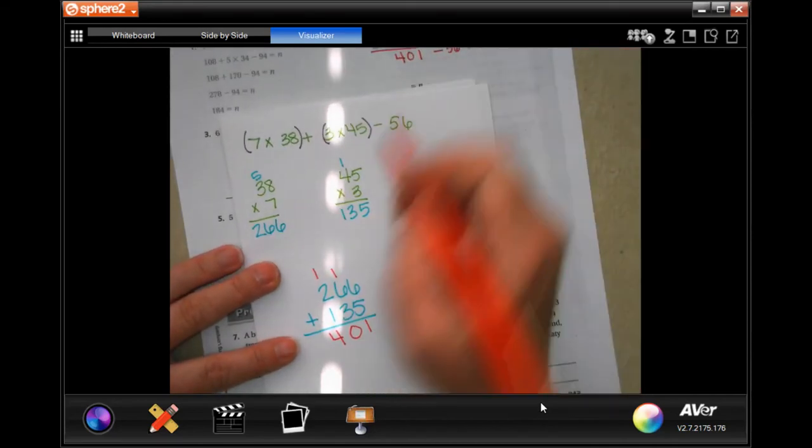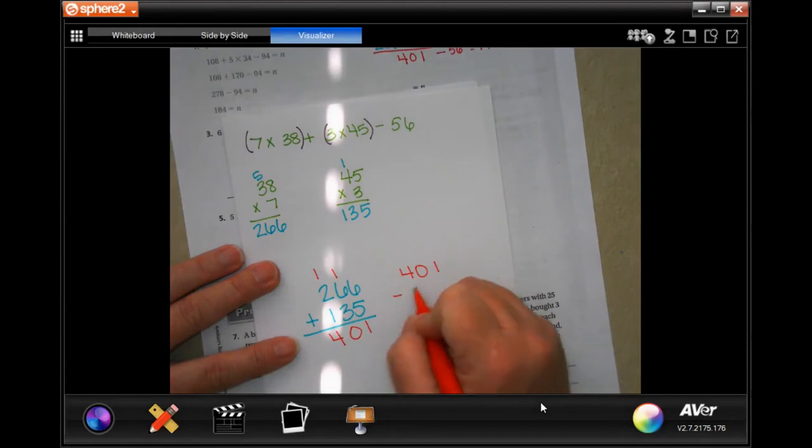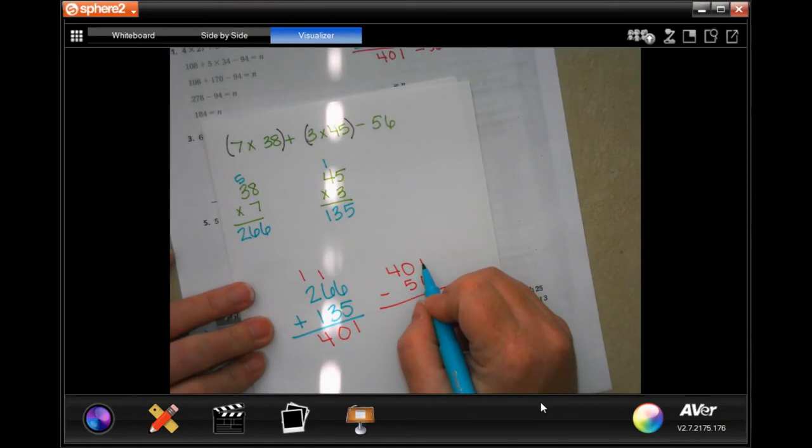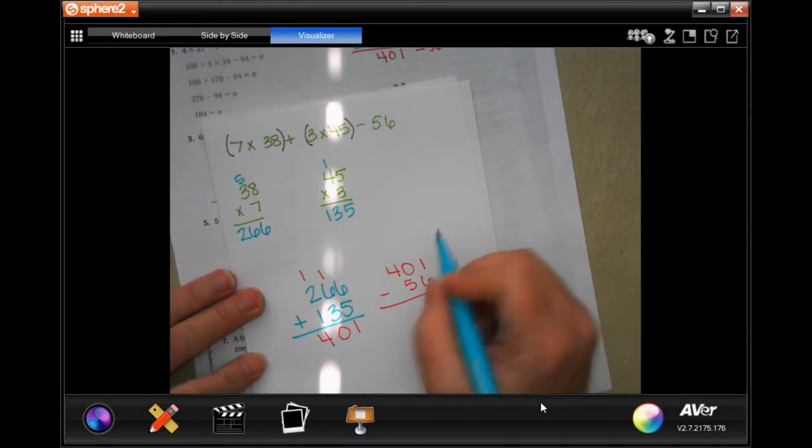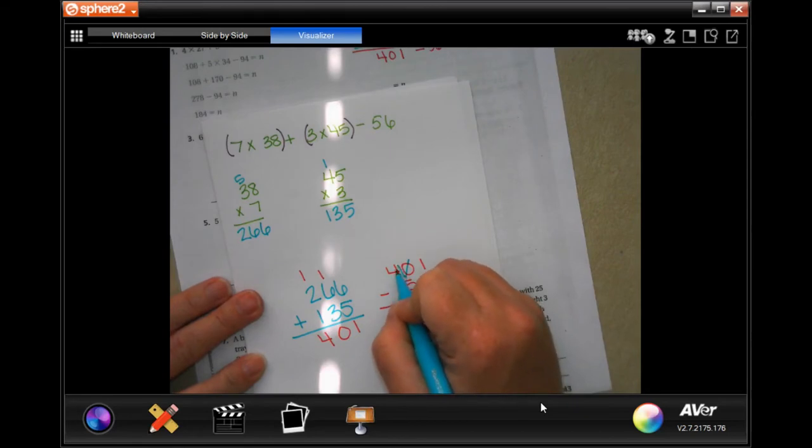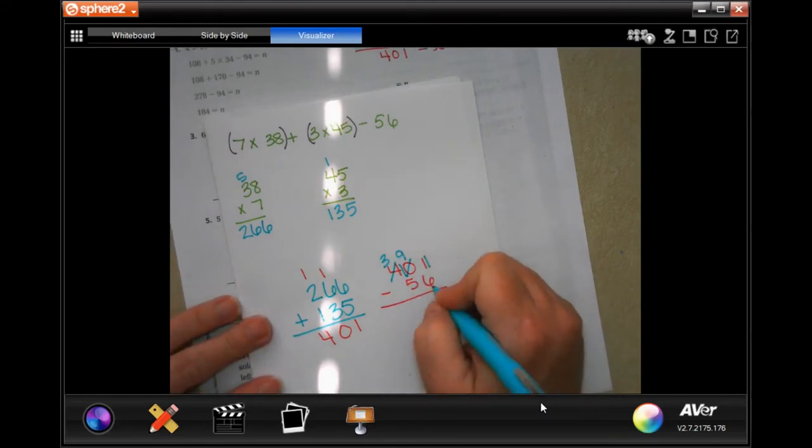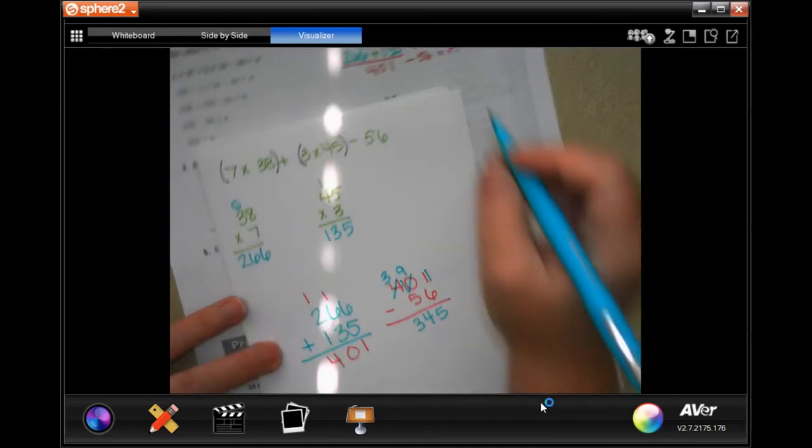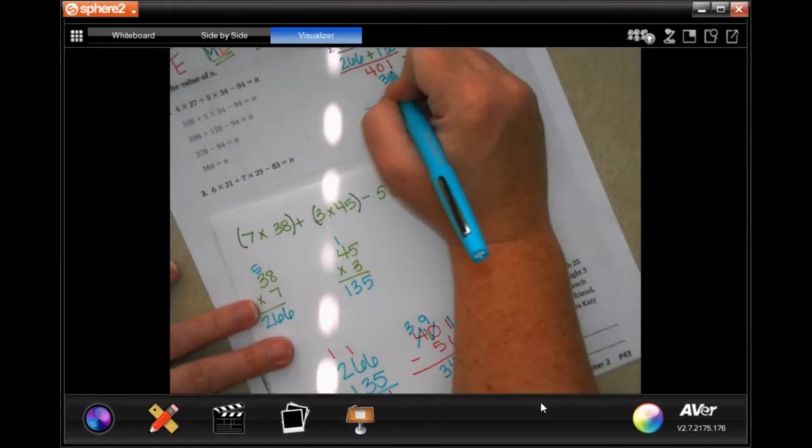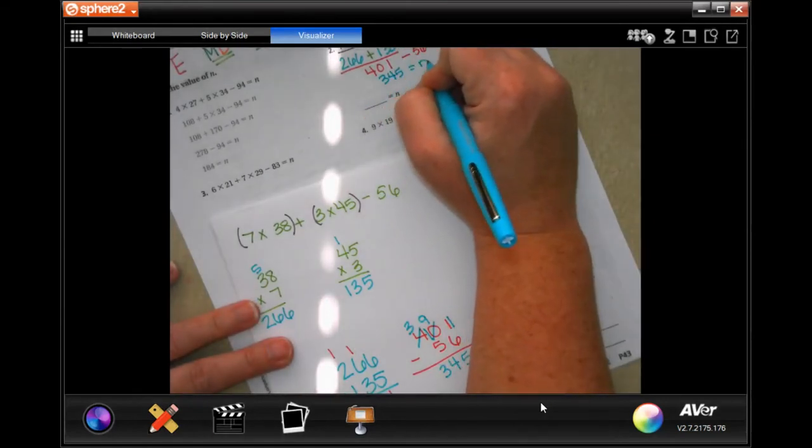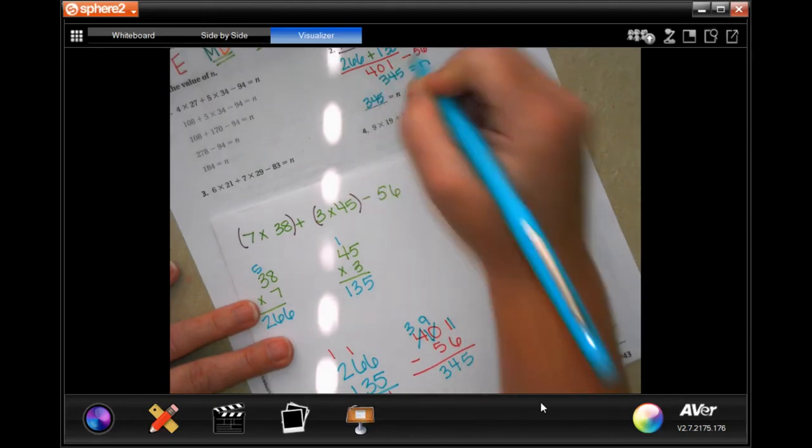So now I have 401 minus 56. Now one cannot take away six, cannot borrow from zero, makes that a three, that a 10. Now I have to borrow one from that one, which makes this one 11. 11 minus six is five, nine minus five is four, and then I can bring my three down. So now I have 345 equals n, 345.